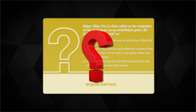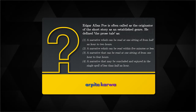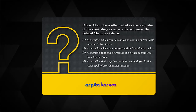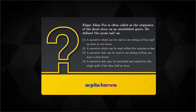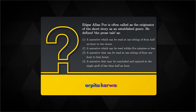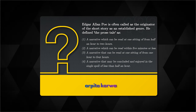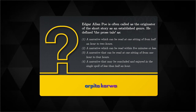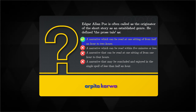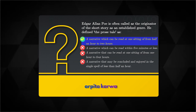Now it's time for a quick question that came recently in the UGC Net exam about Edgar Allan Poe. The question was: Edgar Allan Poe is often called the originator of the short story as an established genre. He defined the prose tale as — and the correct answer is option 1: a narrative which can be read at one sitting of from half an hour to two hours.